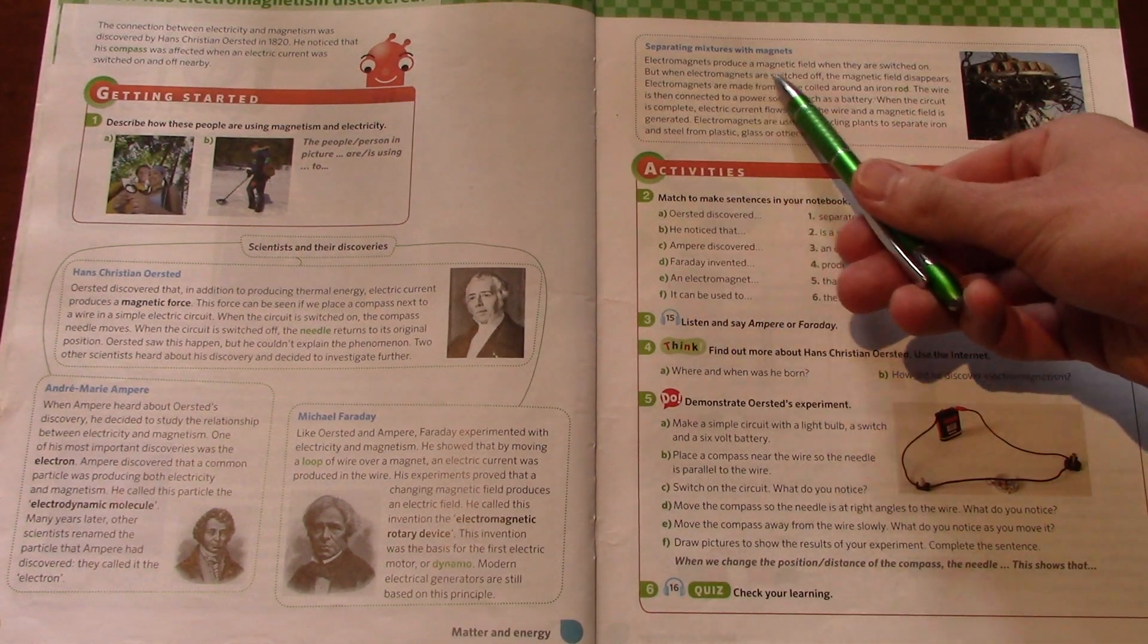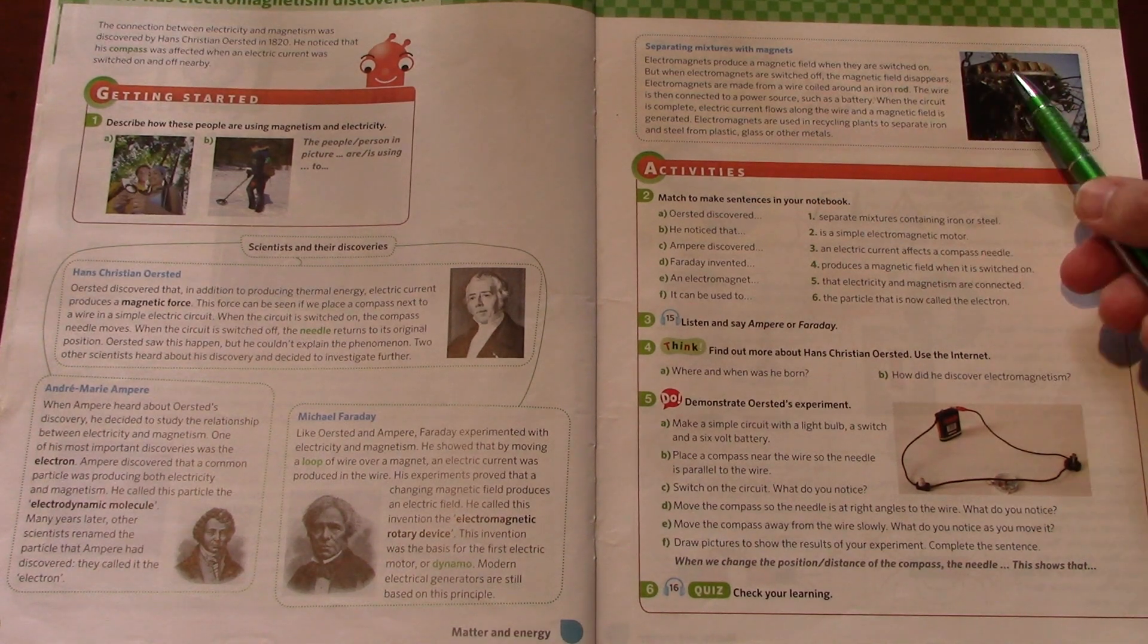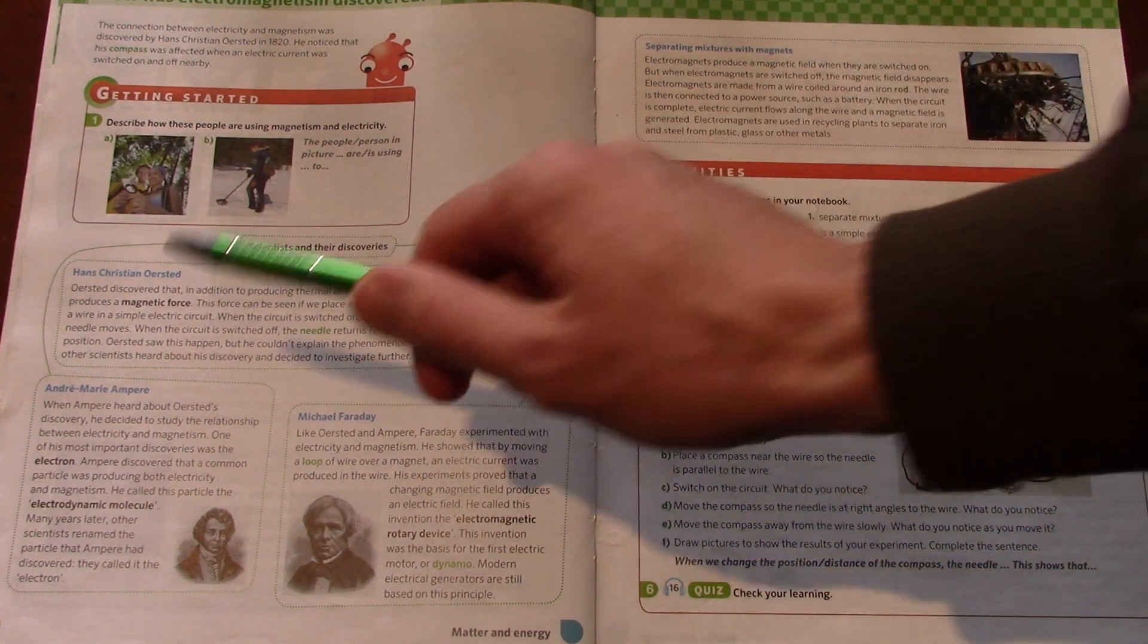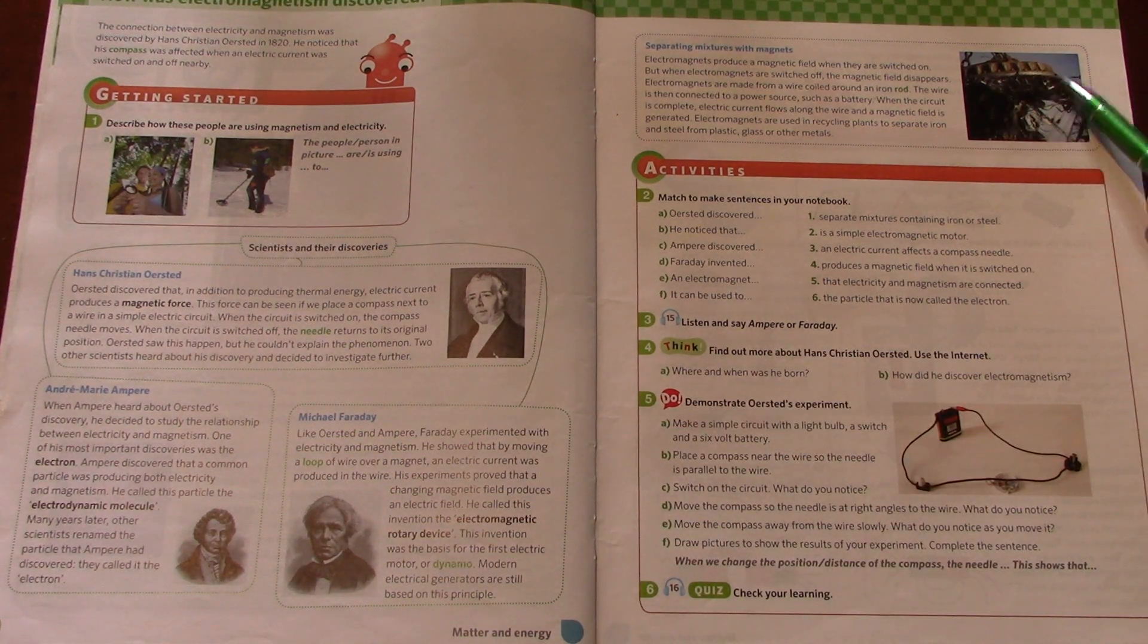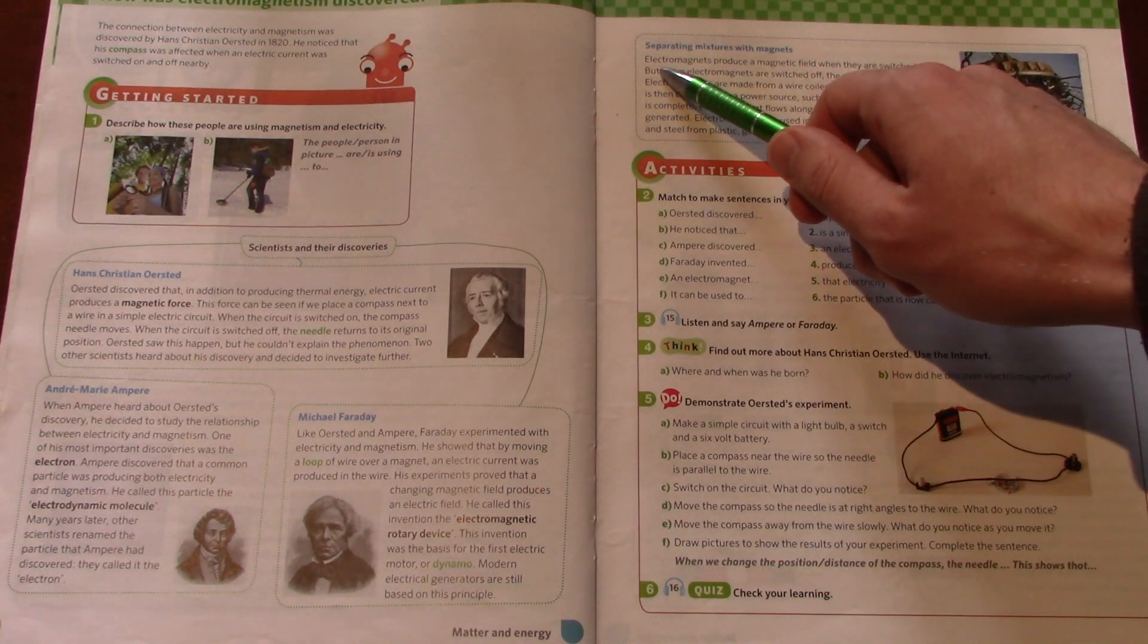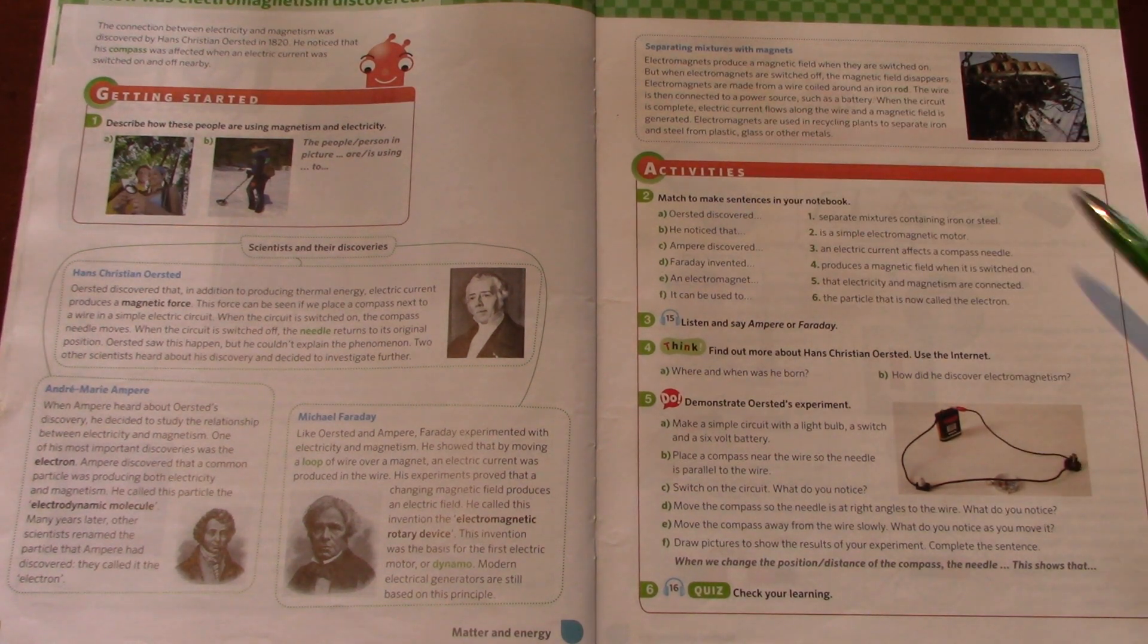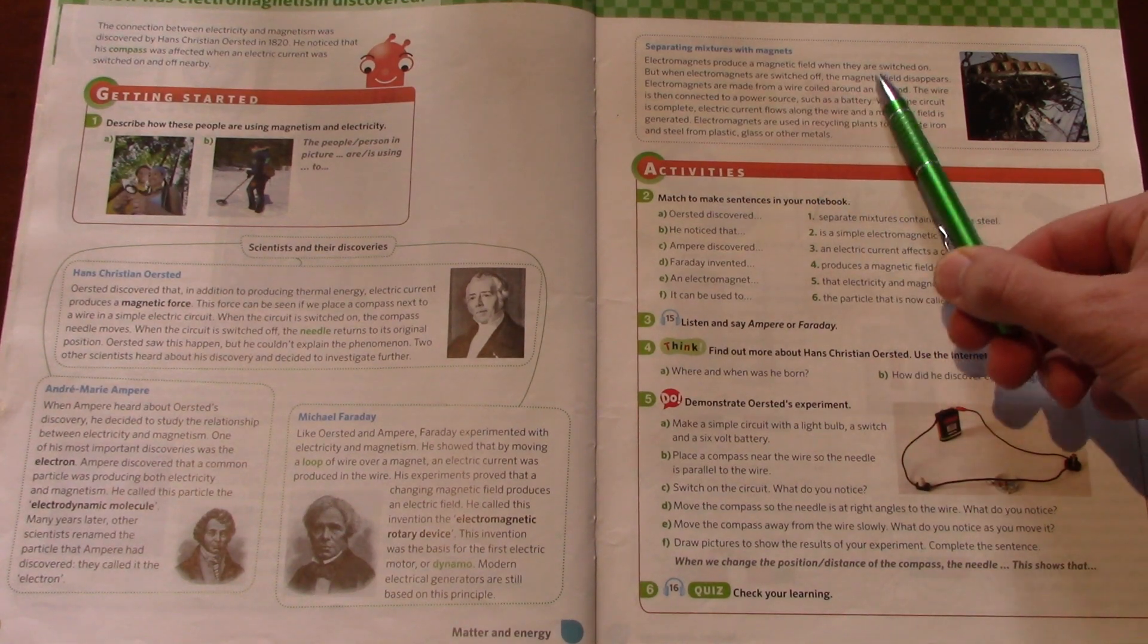Electromagnets produce a magnetic field when they are switched on. So when electricity passes through them, they produce a magnetic field. So again, electricity affects magnetism. There is no magnetic charge without electricity. Electromagnets - electro, electricity, and magnets. But when electromagnets are switched off, the magnetic field disappears.